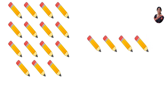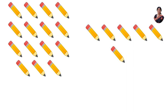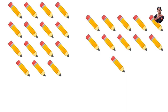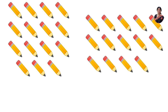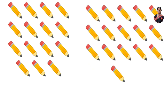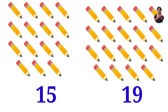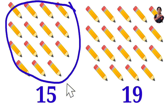One, two, three, four, five, six, seven, eight, nine, ten, eleven, twelve, thirteen, fourteen, fifteen, sixteen, seventeen, eighteen, nineteen. Nineteen pencils. One side fifteen and the other side nineteen. So which is having less number? Fifteen. Fifteen is less. So encircle the side with fifteen.